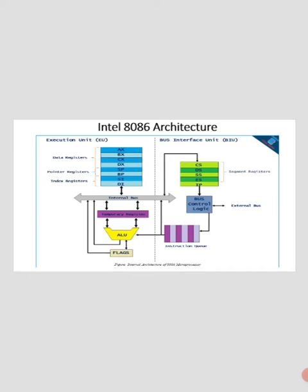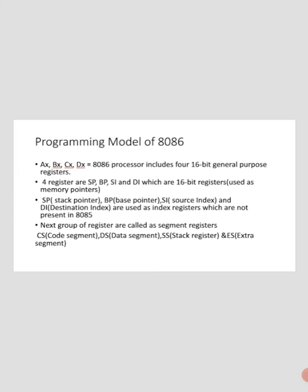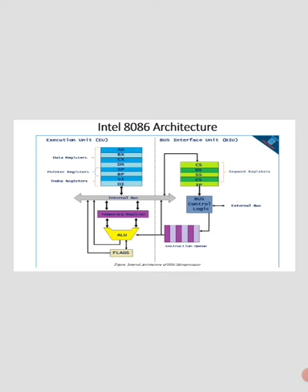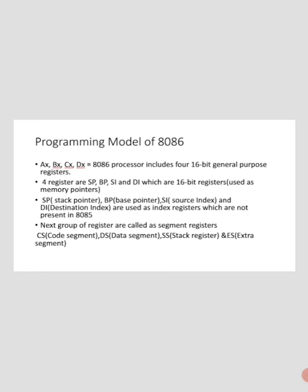The general registers are AX, BX, CX, and DX — these four are the data registers used as general-purpose registers. The next group includes SP, BP, SI, and DI — these are the pointer registers and index registers used as 16-bit memory pointers. SP means stack pointer, BP means base pointer, SI means source index, and DI means destination index. These registers are not present in the 8085.